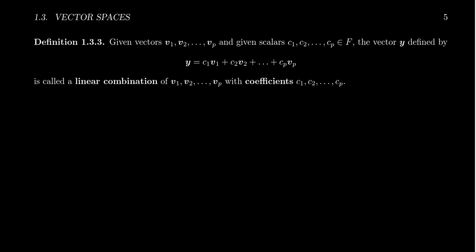And take some same number of scalars, c1, c2, up to cp. These are scalars that belong to the field, and our vectors are belonging to an F vector space.